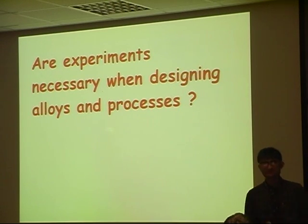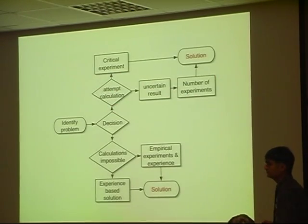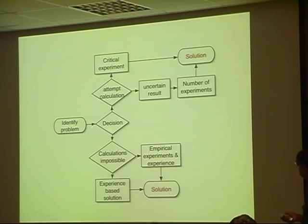Sometimes we need to do experiments, sometimes we don't need to do experiments. But the way we decide whether we need to do experiments is as follows. That supposing you have a problem, then I would first attempt a calculation. If a calculation gives me a very good result, that means I understand what it is saying and I believe in it, then I can just do a critical experiment to test that calculation. And I might immediately get the solution. If the calculation has a lot of uncertainty, then I might need to do a number of experiments and reach a solution.